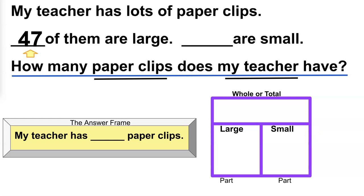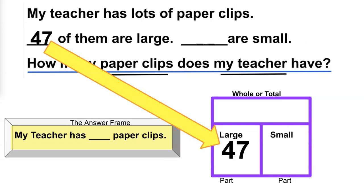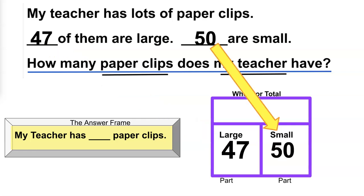I'm going to put in the numbers. 47 of them are large so I record that into my bar model. 50 of them are small. I record that as well. This is going to help me to know what I'm going to need to do. What do I need to do? I need to find the whole or the total.